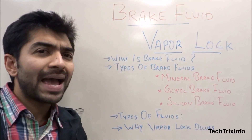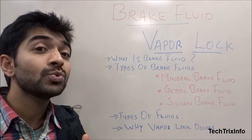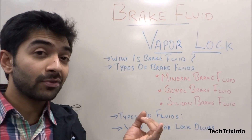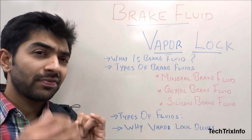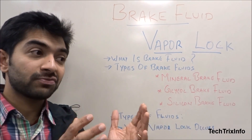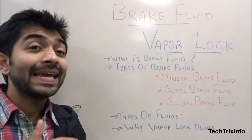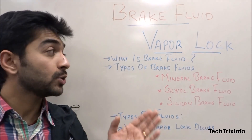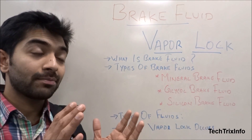Going back to school physics, there are two types of fluids: compressible fluid and incompressible fluid. Compressible fluids are gaseous — they can be compressed — while incompressible fluids are in liquid state. Incompressible fluids are used in the hydraulic braking system because they are incompressible, and that is what gives efficiency to the brake system.